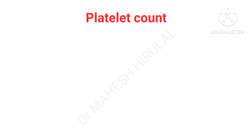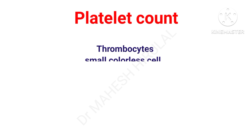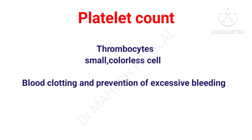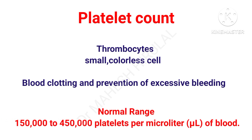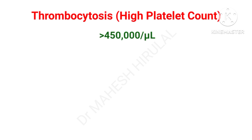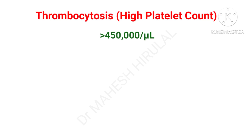Platelets are also called thrombocytes — small, colorless cells whose major function is blood clotting. The normal range of platelets is 1.5 lakh to 4.5 lakh per microliter. An increase in the number of platelets is called thrombocytosis.